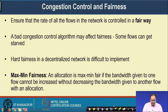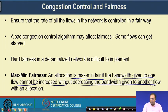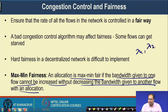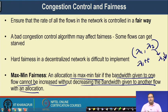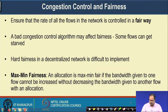Max-min fairness means an allocation where the bandwidth given to one flow cannot be increased without decreasing the bandwidth given to another flow. In an allocation with two flows lambda1 and lambda2, it is max-min fair if increasing lambda1 by epsilon requires decreasing lambda2.